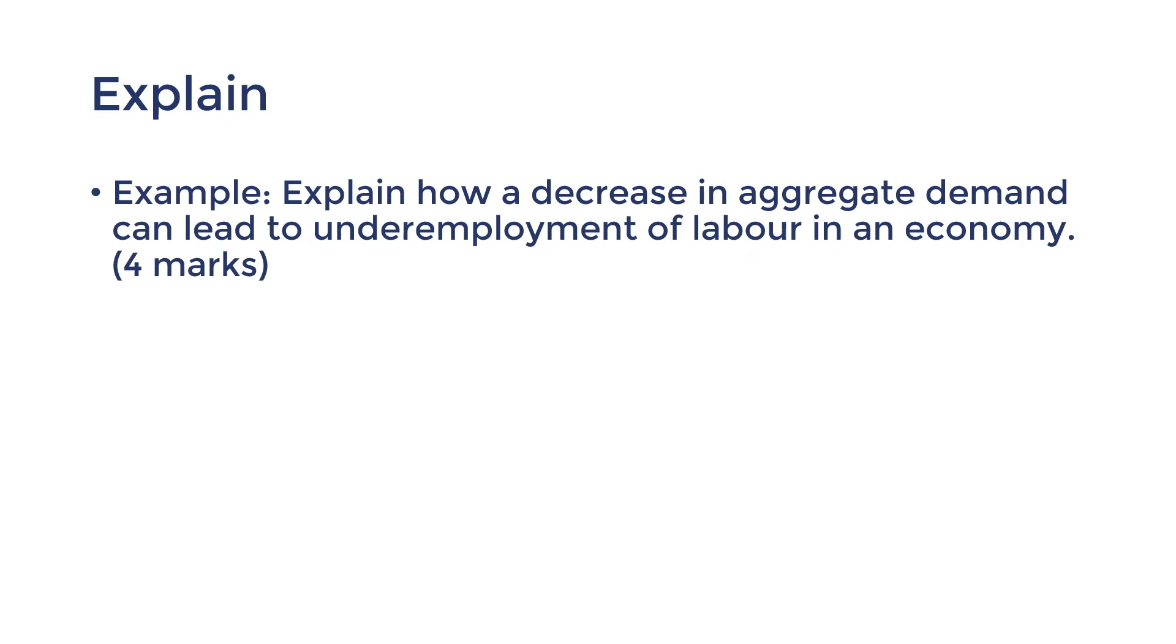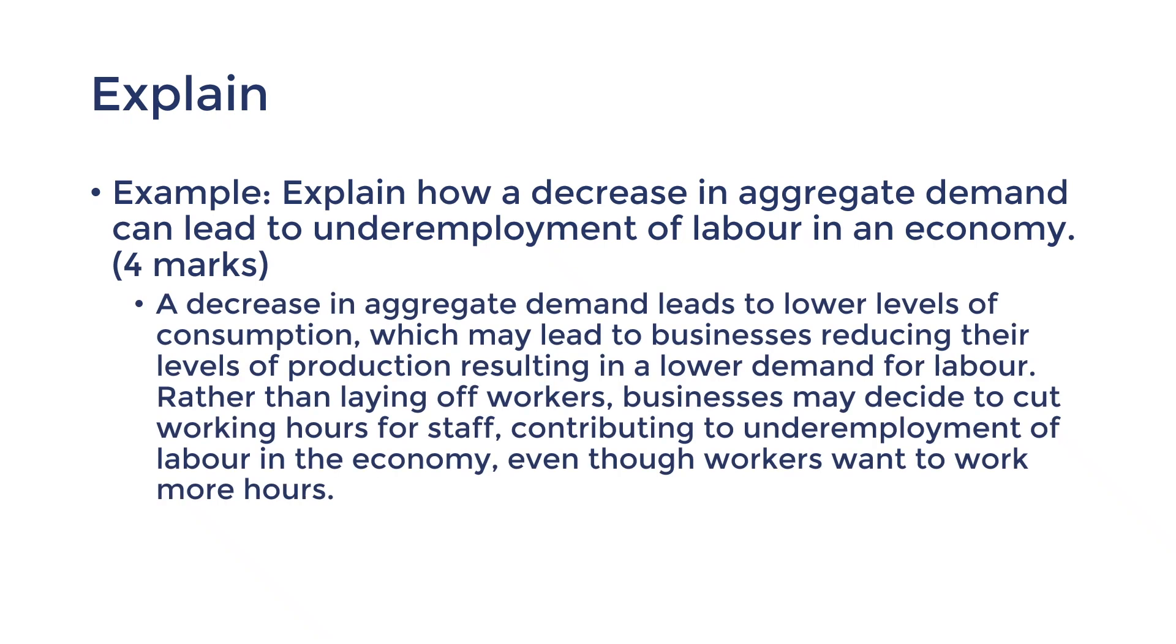Let's look at an example of 2020's HSC. Explain how a decrease in aggregate demand can lead to underemployment of labor in an economy, for four marks. This requires you to make a four mark link from the cause, which is decrease in aggregate demand, to the effect, which is underemployment. Now watch this sample answer from the marking guide. A decrease in aggregate demand, A, leads to B, lower levels of consumption, which may lead to C, businesses reducing their levels of production, resulting in D, a lower demand for labor. This then results in E, the effect, increased underemployment, if businesses cut working hours for staff rather than firing them altogether. You can also include more detail by showing that you know the definitions. As you can see, the definitions of the cause and effect are integrated into this answer. Consumption is a key component of aggregate demand, and underemployment is when workers want to work more hours.